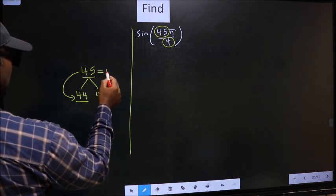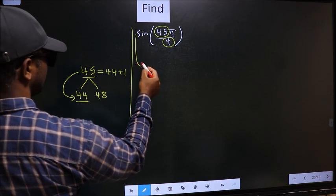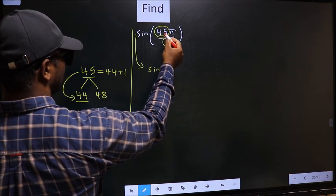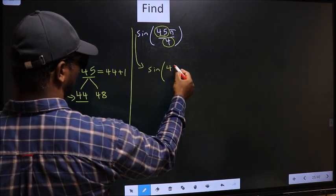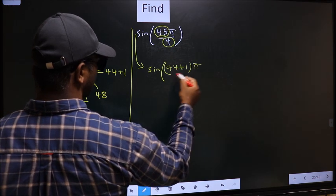So, 45 should be written as 44 plus 1. So, this will change to sin. In place of 45, now I write 44 plus 1, π/4.